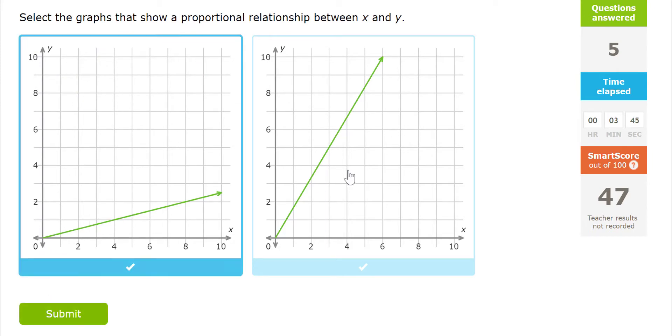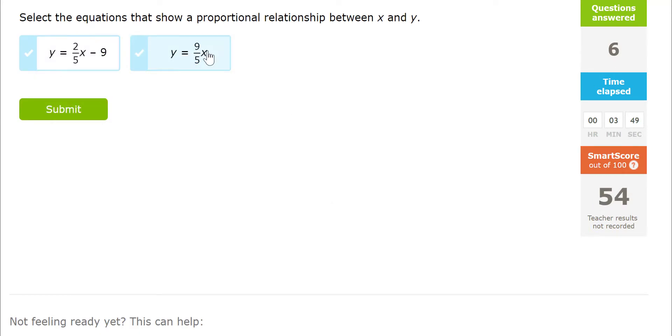Both of these are straight lines and they both start at zero, so they're both proportional. This one here says we have two-fifths x, which is fine, but it also says we want to start at negative nine on the y-axis. That one is not proportional. We want to be able to start at zero. This one, I could add a plus zero onto it. So the first one is not proportional. The second one is because it would start and go through the origin.